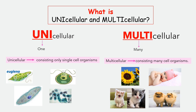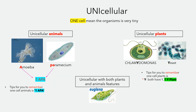Multicellular means an organism with many cells. When we talk about unicellular, we talk about organisms with one cell, so a one-cell organism is very tiny. Examples of unicellular animals are amoeba and paramecium.